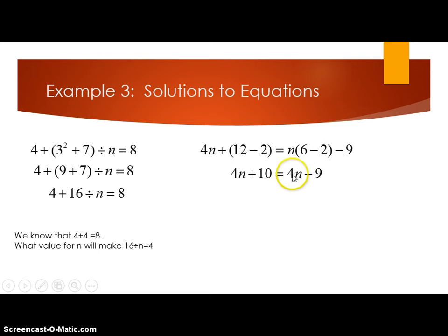And what I want you to notice and look at here is that my variable part of my equation is the same, but the constant part is different. So there's not a number I can plug in for n to make this true. So when you get to a point like this, we're going to say this has no solution.